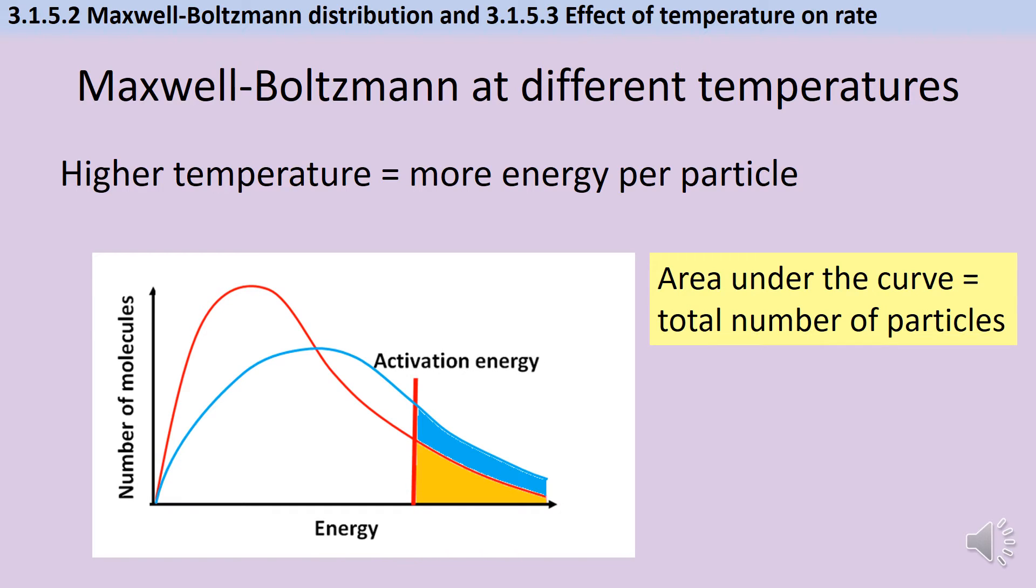So here's an example of the same reaction happening at a higher temperature and there are some key things you need to recognise. The first one is that the peak will be lower and this is because as it's skewed to the right the whole thing just has to come down in order to maintain the area under the curve.